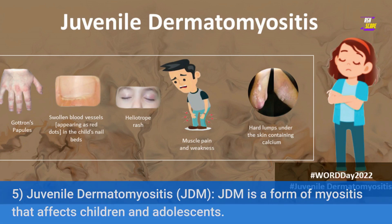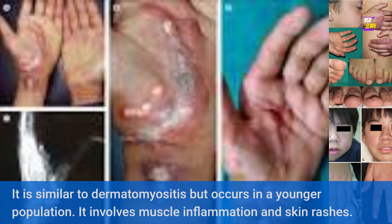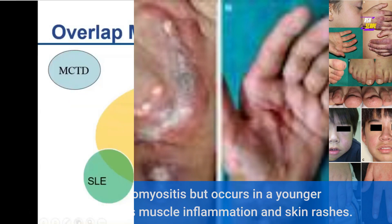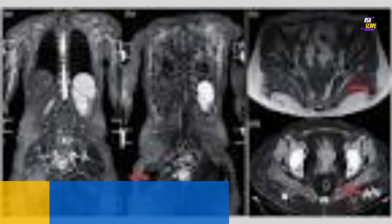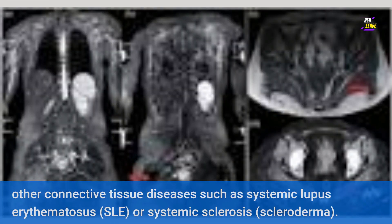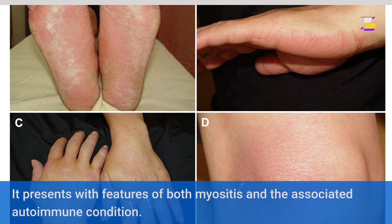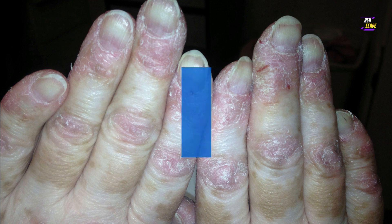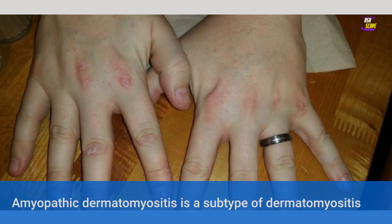5. Juvenile Dermatomyositis (JDM) — JDM is a form of myositis that affects children and adolescents. It is similar to dermatomyositis but occurs in a younger population and involves muscle inflammation and skin rashes. 6. Overlap Myositis — overlap myositis refers to cases where myositis occurs in conjunction with other connective tissue diseases such as systemic lupus erythematosus (SLE) or systemic sclerosis (scleroderma).